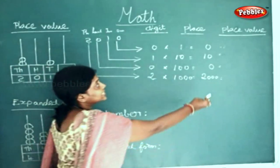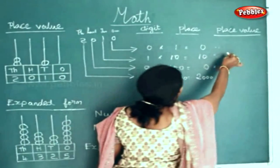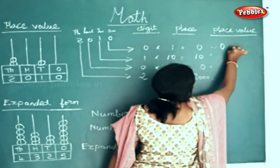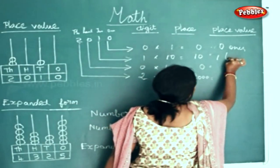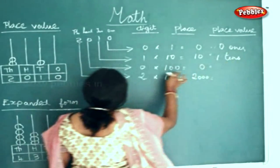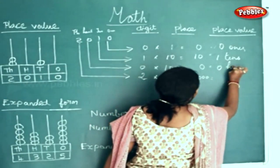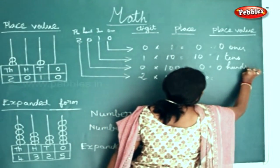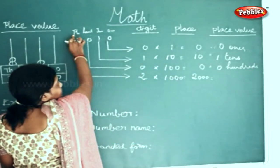Now we shall see the place value for it. 0 ones, so this will be 0 ones. This will be 1 tens. This will be 0 hundreds. And this will be 2 thousands.